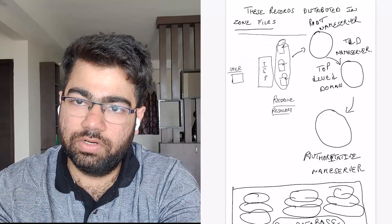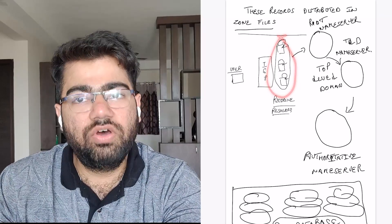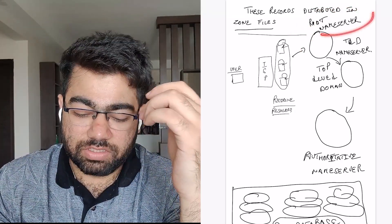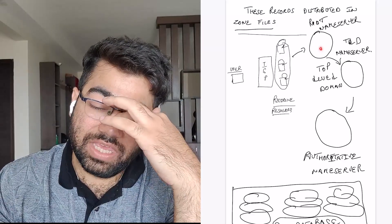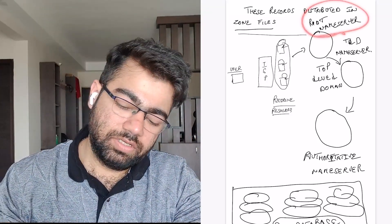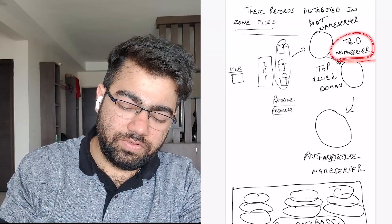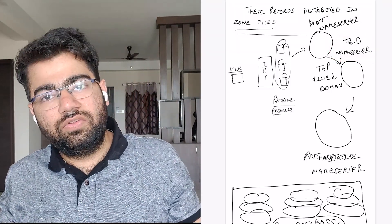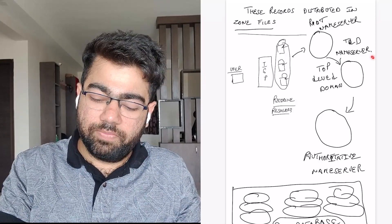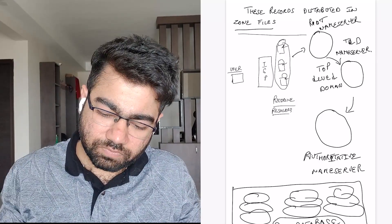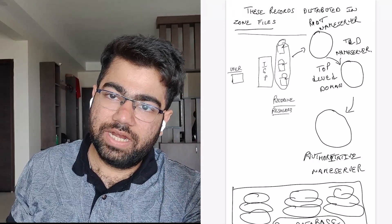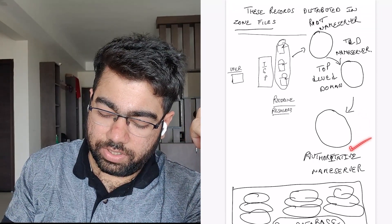If the record is found in the recursive resolvers, the IP address is returned and you don't have to go the full route. But if it's not found, the request goes to the root name servers. If the root name servers also cannot find the mapping, they make a call to the Top Level Domain server. The TLD server to contact is decided based on whether you're visiting a .com, .in, or whatever website you are trying to visit.